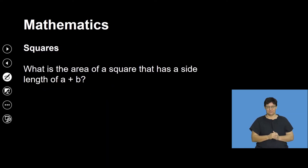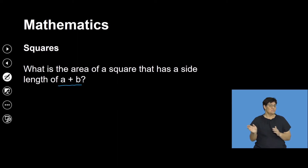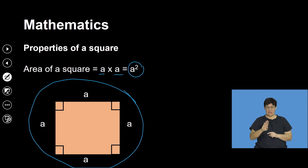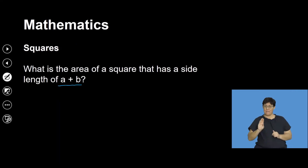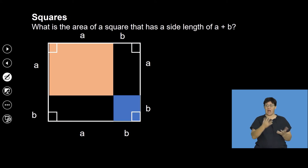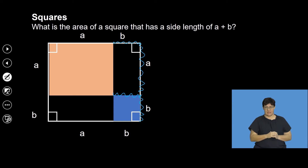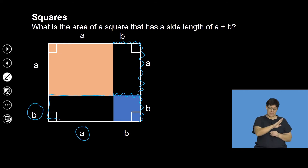What happens if the area has a side length of a plus b? It's no longer just a. If I add a portion to the square and make it a plus b on each side, the shape will look like this. On the side I add length b — this is still a — and that is b. This gives a rectangle with dimensions a and b, and a new small square in the corner with dimensions b by b.